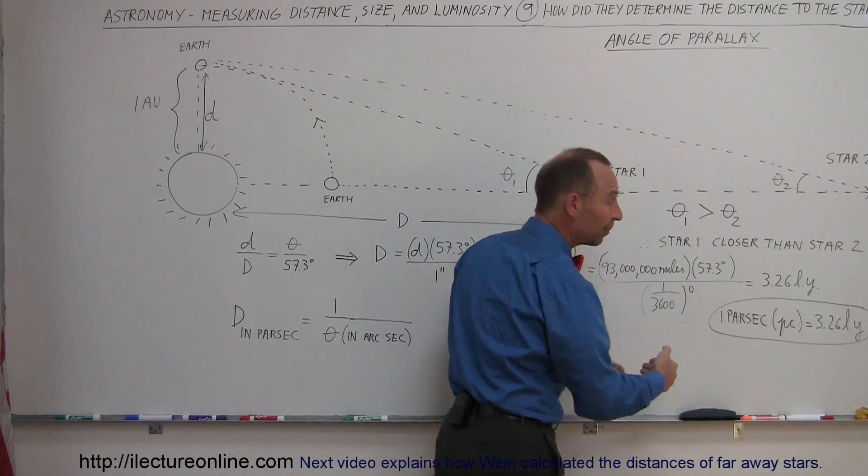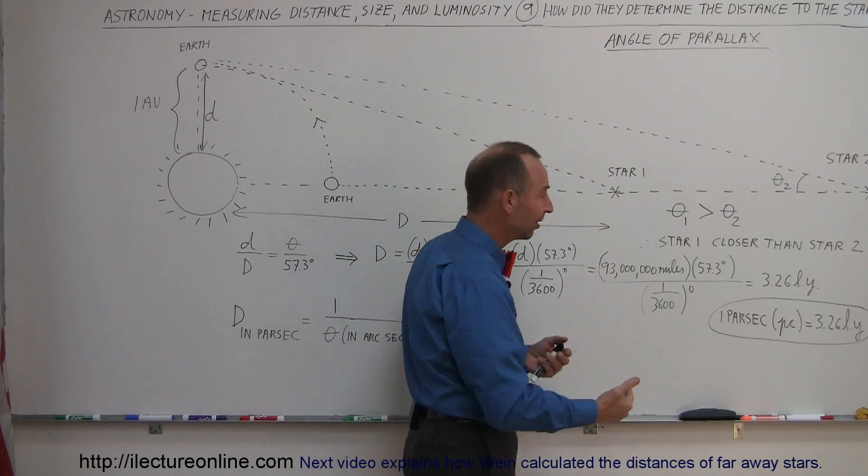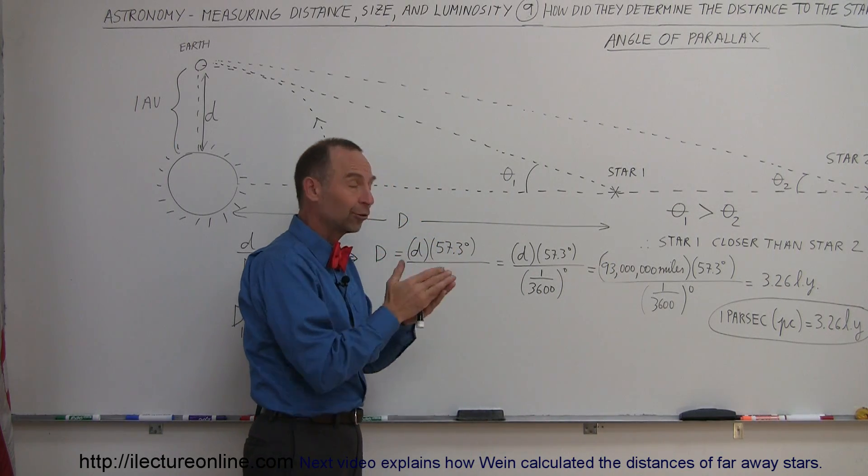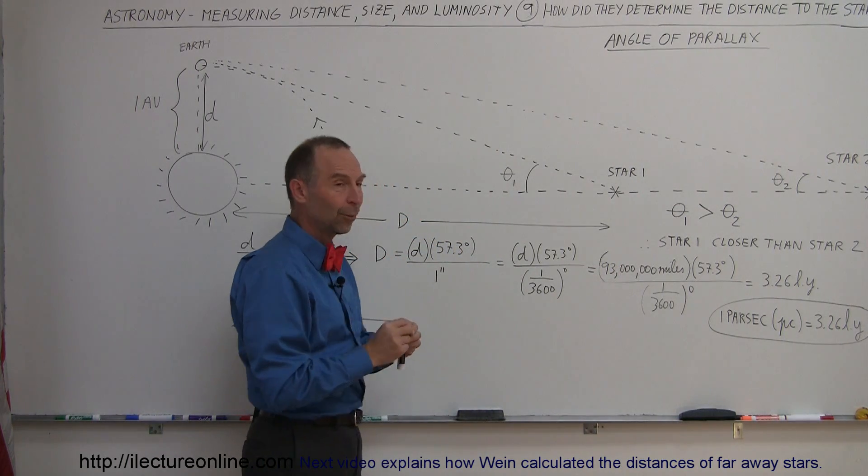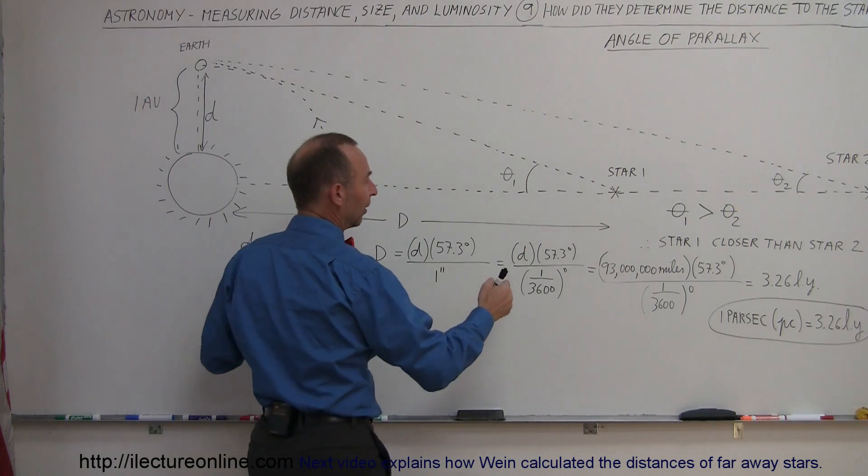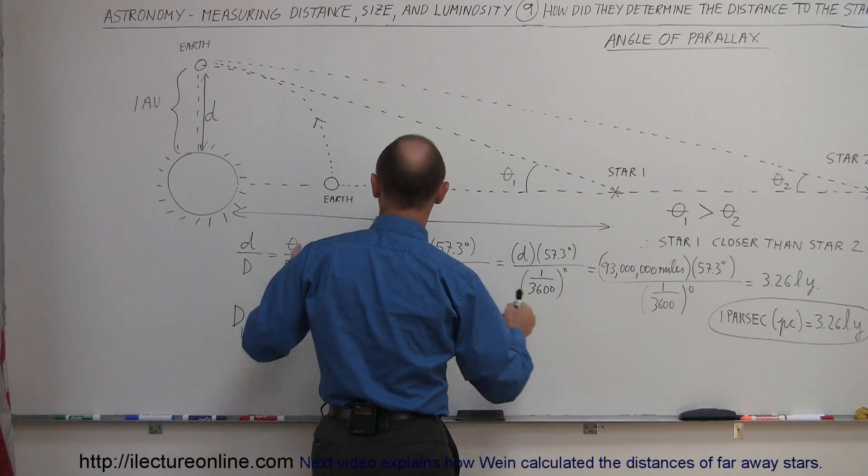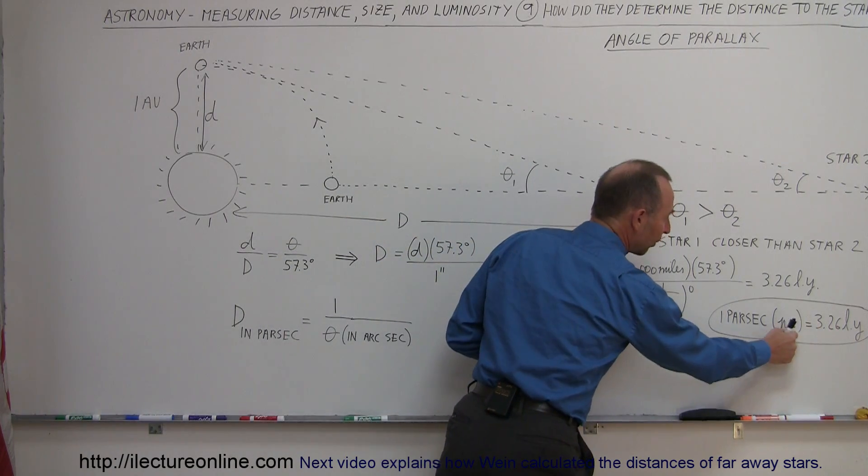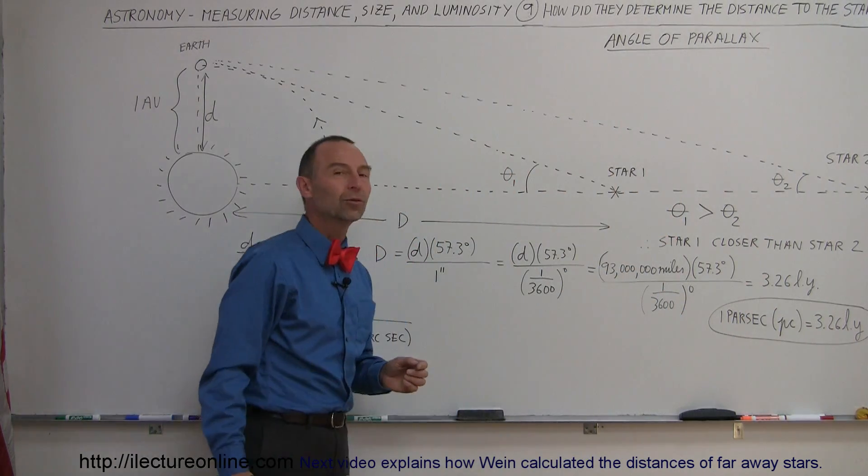Well, par comes from the angle of parallax, and seconds comes from the unit arc seconds. So when they put those two together, one parsec - we have the distance when the angle of parallax is one arc second, the distance therefore is one parsec, and therefore 3.26 light years.